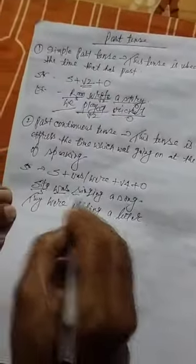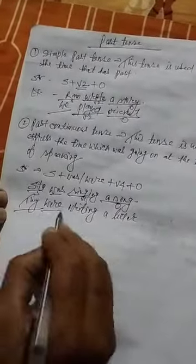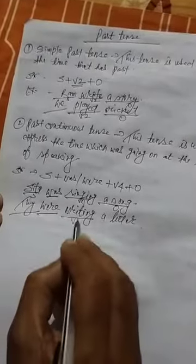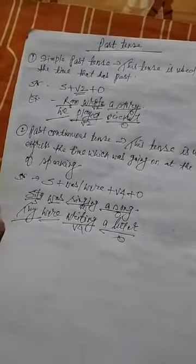So subject was, V4, and object. In case of plural verb, were is used, V4 is used, and this is object.